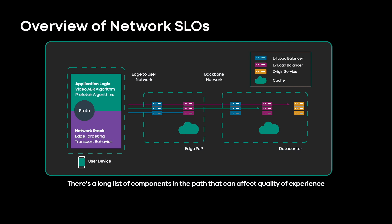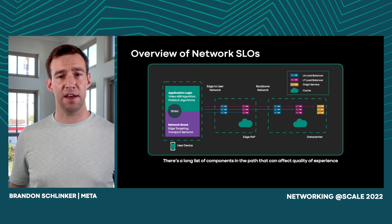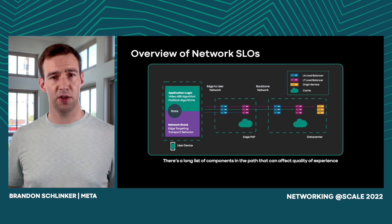You have application logic like the ABR algorithm deciding which bit rate of video to play — HD or SD. You have the network stack, deciding which of our POPs to send the user to. You have our custom QUIC transport. You also have the edge-to-user network, components at the edge POP like load balancers and the cache. Some requests might traverse our backbone, where they encounter more load balancers, a different cache, and the origin service. Any one of these components can affect quality of experience and could be responsible for the regression.